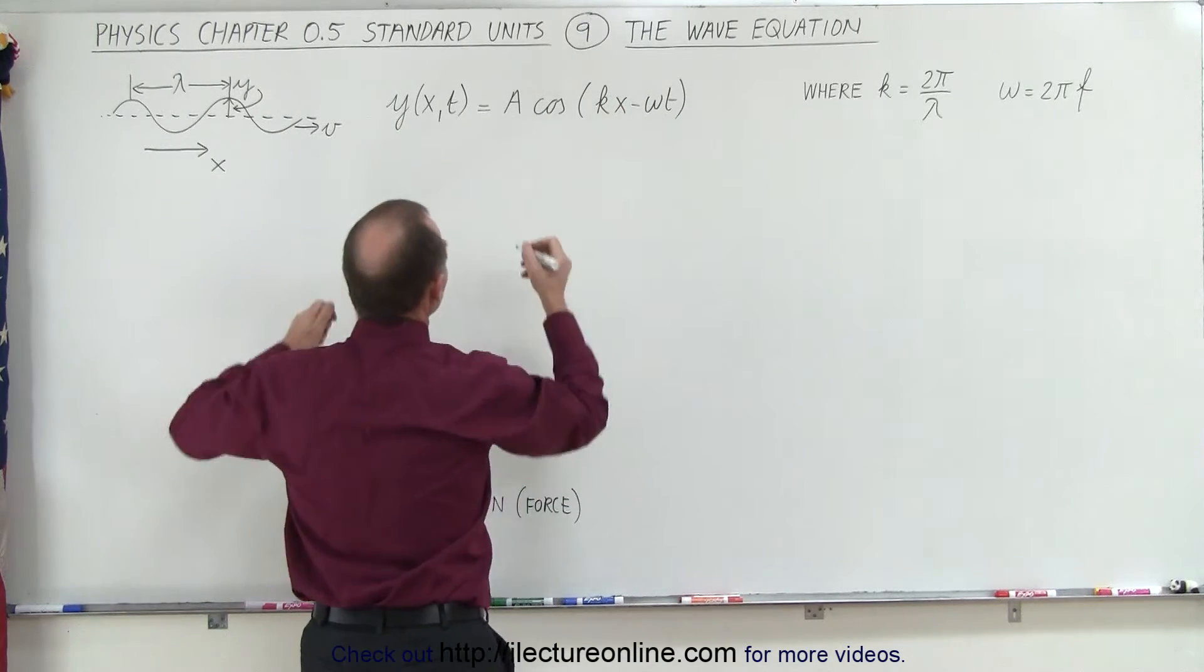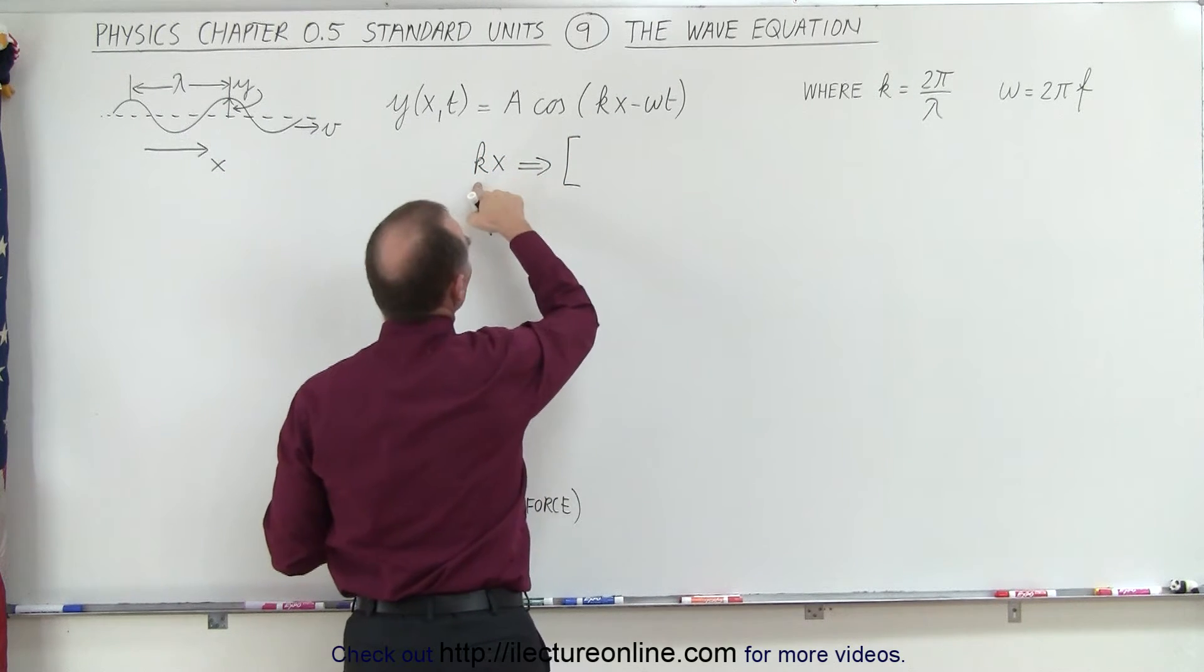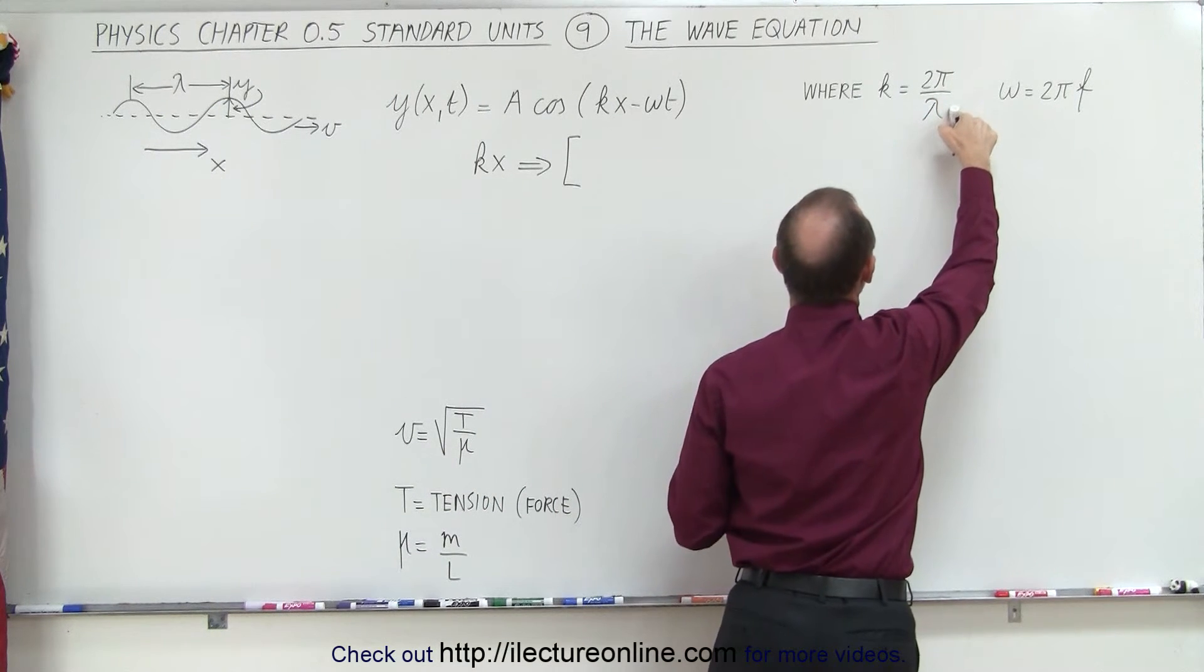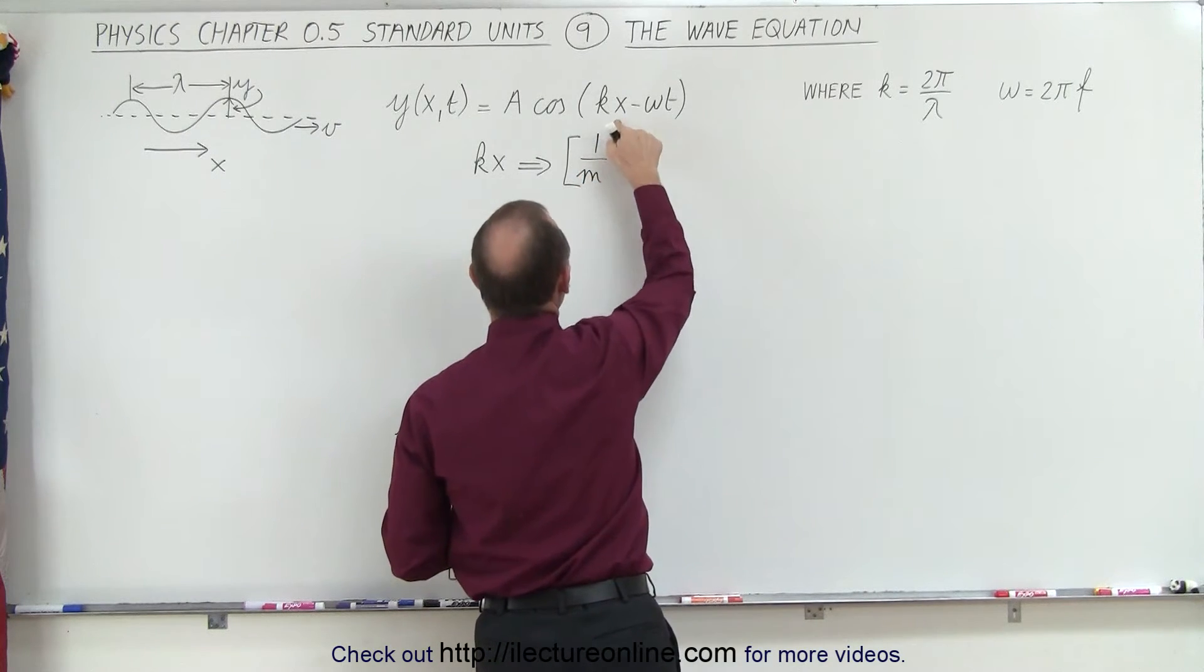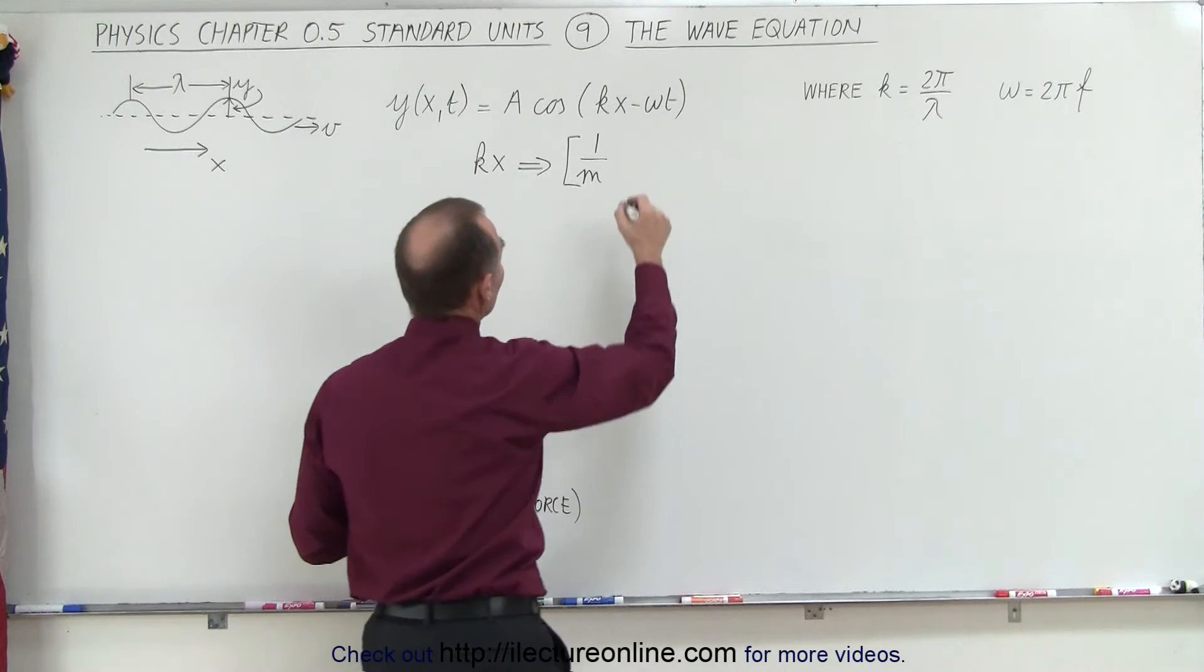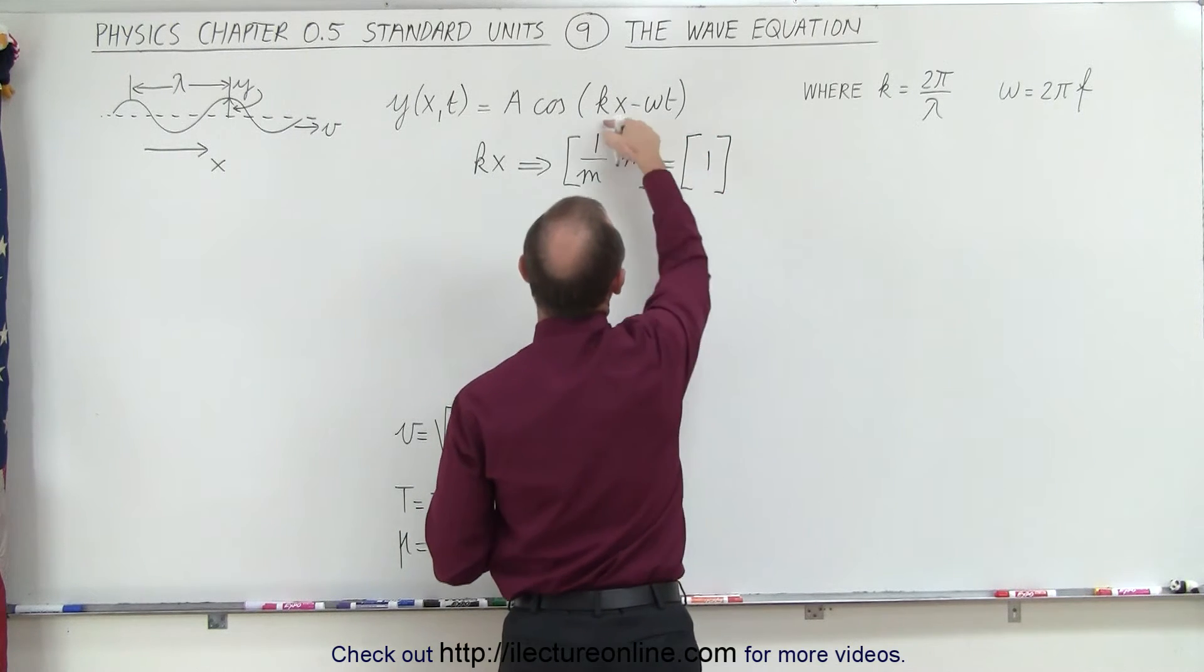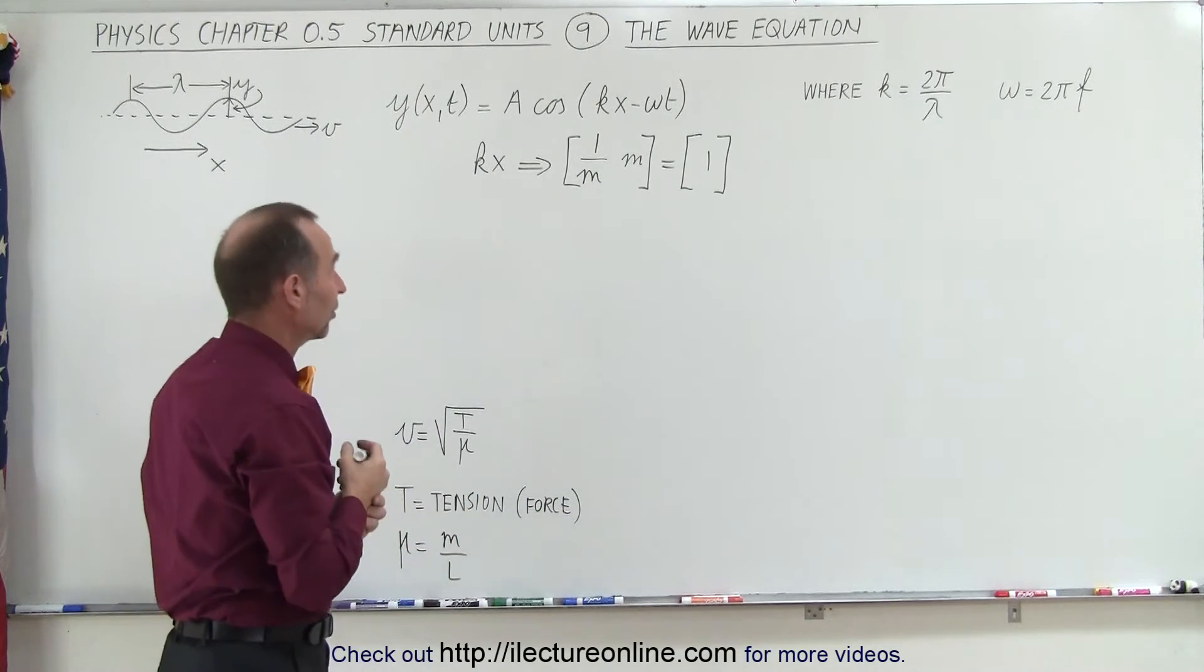So first let's start with kx. So kx, if we look at the units, k is the wave number which is 2 pi, that's just a constant, divided by the wavelength which is the unit of length, so we end up at 1 over meters. And x is distance in the horizontal direction, which is units of meters as well. And notice that meters divided by meters, that is equal to 1. In other words, this term right here, kx, does not have units.